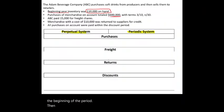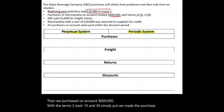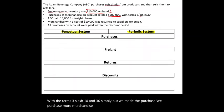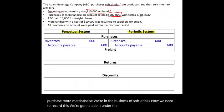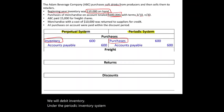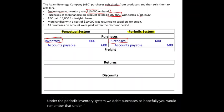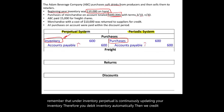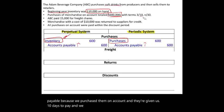We purchased on account $600,000 with terms 3/10 n/30 — we purchased more merchandise, as we're in the business of soft drinks. Under the perpetual inventory system, we debit Inventory. Under the periodic inventory system, we debit Purchases. Perpetual continuously updates inventory, so you debit Inventory automatically. We credit Accounts Payable because we purchased on account, giving us 10 days to pay with a 3% discount if paid within that period.